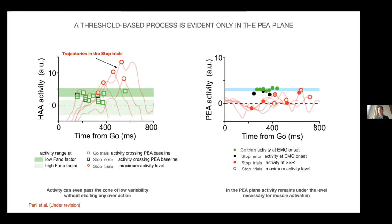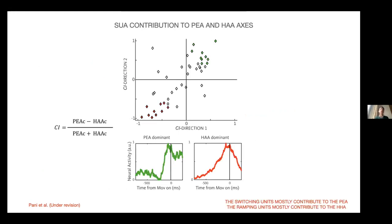Conversely, if we now move to the planning and execution plane and we highlight neural activity corresponding to the time when the EMG starts to be evident, we are here observing a threshold well evident, because activity in the successful stop trials always stays away from this threshold, while the threshold is evident when looking at activity in the green and black dots that represent the time when go trial activity and stop error activity—therefore when movement is produced—are emerging from the at the time of the EMG onset. So the threshold is not always evident, or at least there are different mechanisms that could be described.